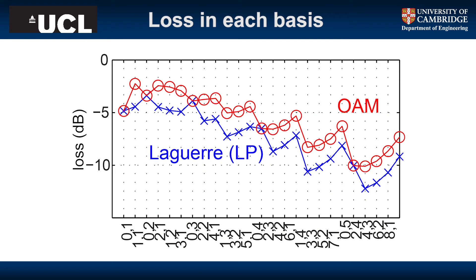I've calculated masks for my system for both the LP and the OAM basis, and there's about a 2 dB improvement in loss with the OAM basis. That 2 dB value is not universal — it depends on your system parameters. But the point is that the OAM basis is always more efficient than the LP basis.